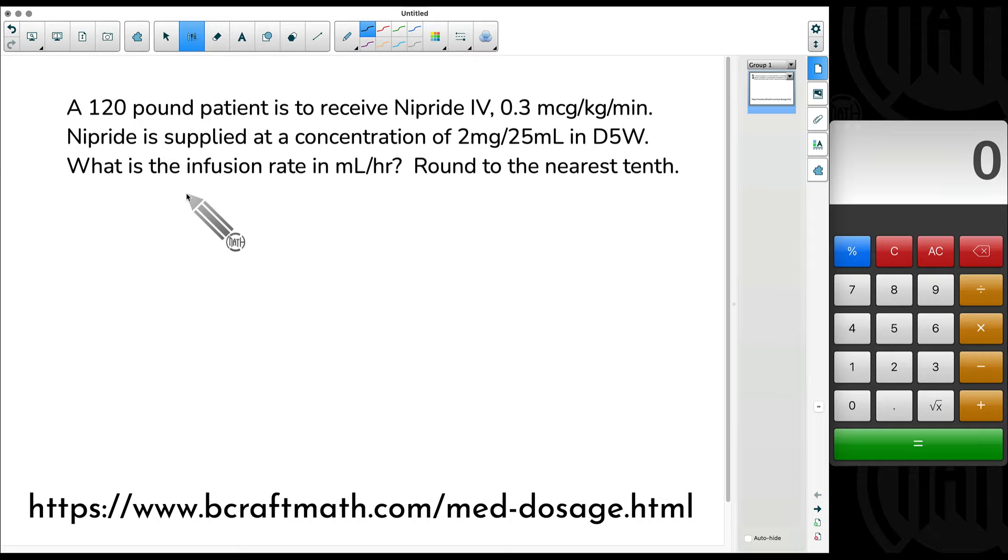I always start by reading the question first in a med dosage problem. So skipping over all this stuff, I'm looking at this question: What is the infusion rate in milliliters per hour? This allows me to establish a goal. Our goal is to figure out how many milliliters per hour.